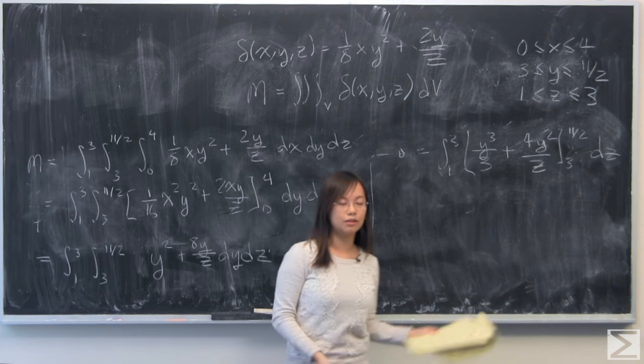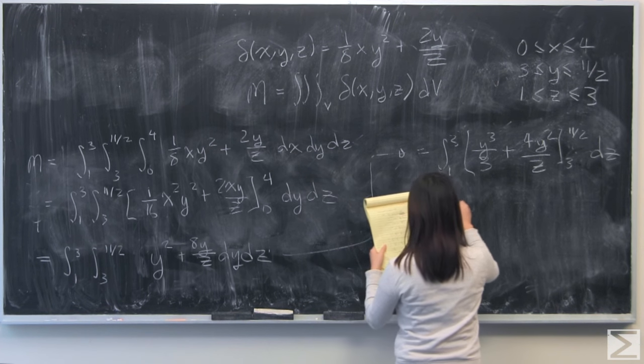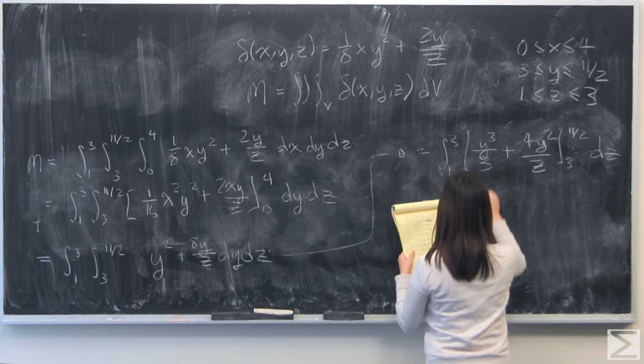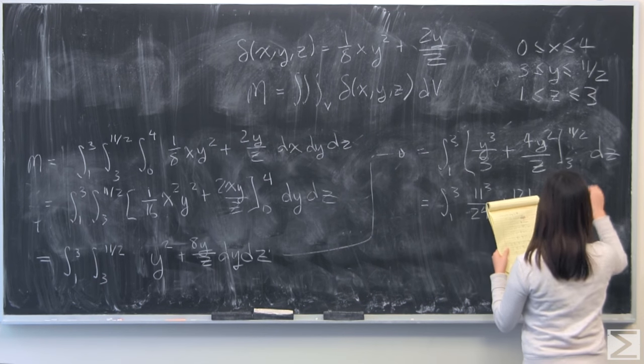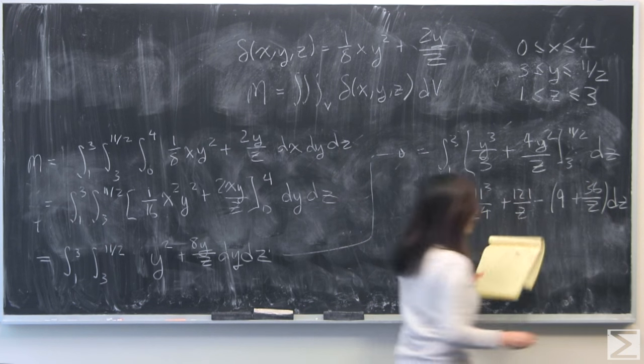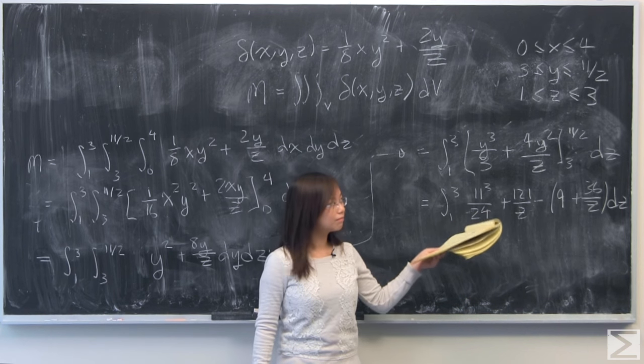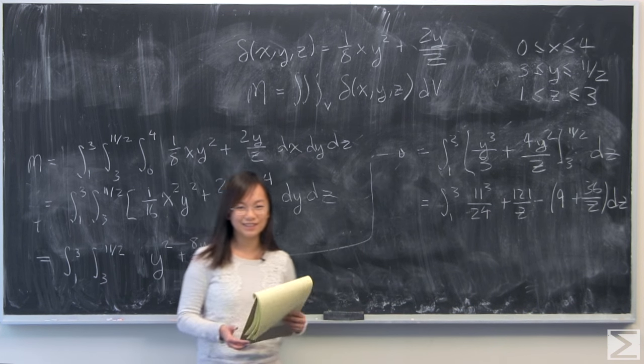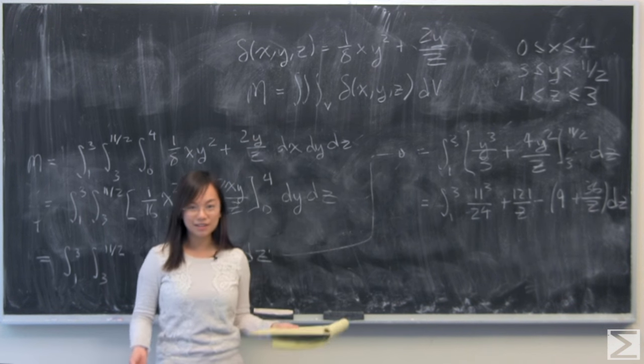I'm going to do the anti-derivative with definite limits. This is what you get as a result. The 11 over 2 makes this a little weird to look at, but it's still pretty simple.